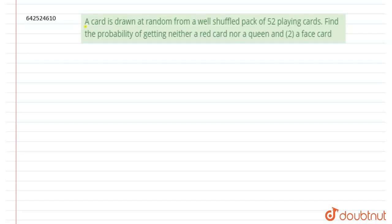A card is drawn at random from a well shuffled pack of 52 playing cards. Find the probability of getting neither a red card nor a queen, and a face card. Let us find the total number of possible outcomes. We have 52 cards, so the total number of outcomes will be equal to 52.